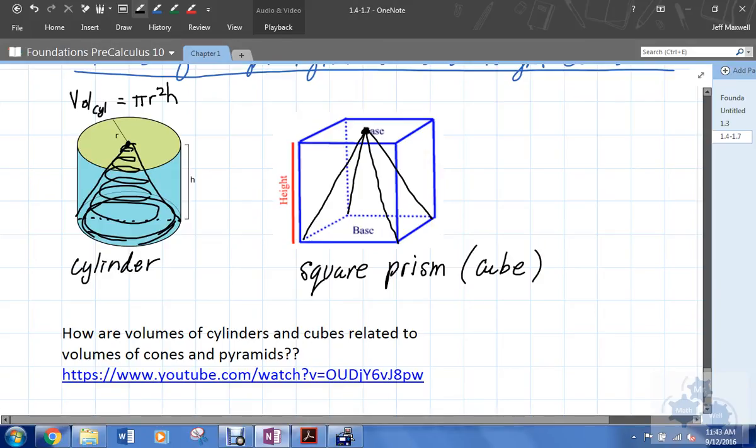So any kind of prism, whether it's a circular prism - that's what a cylinder really is - or a cube, which is a square prism, it's the area of the base times the height. So if this is side length L, the volume would be L squared times H, or the area of the base times the height.